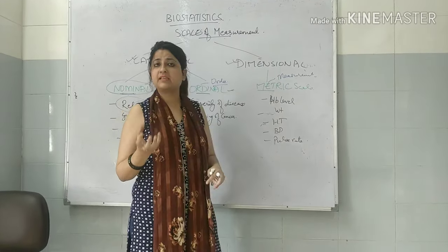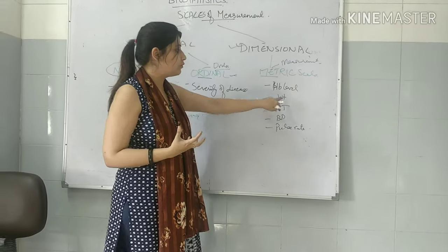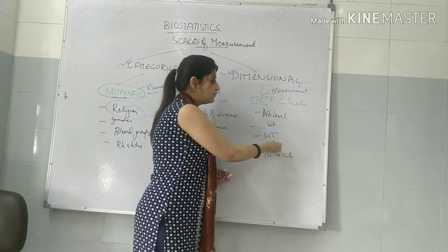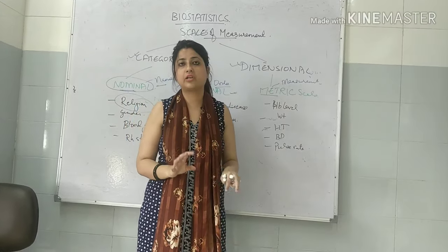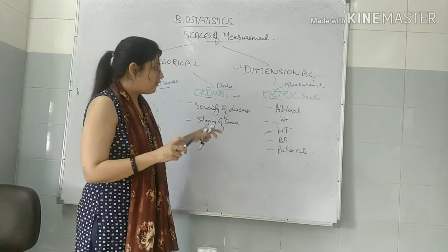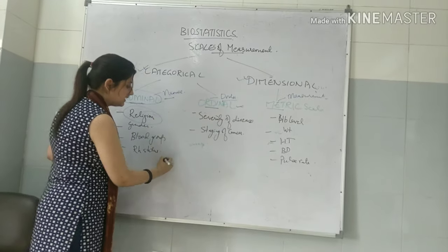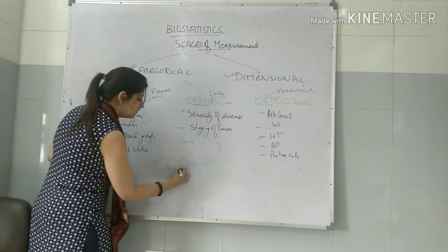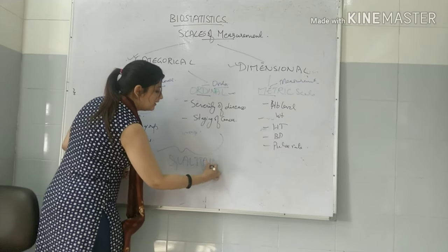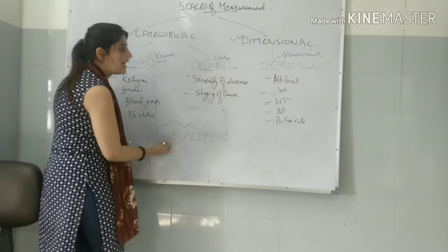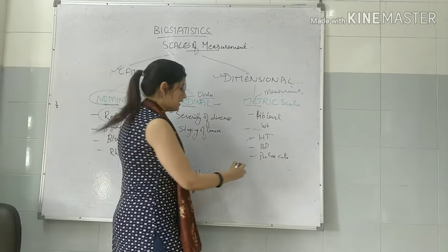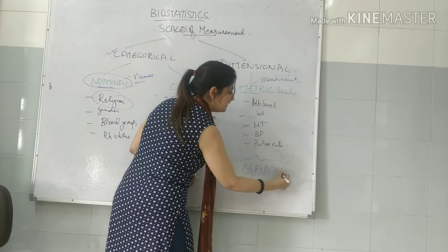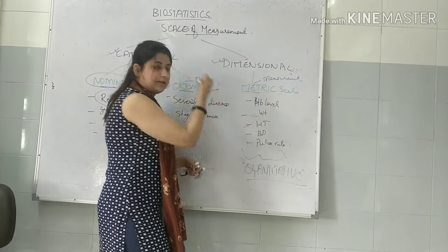The third is metric scale, which is based on measurements — where we can get exact measurements. Weight, height, BP, and hemoglobin level are all measured on metric scale. Notably, nominal and ordinal scales are for qualitative data, while metric scale is for quantitative data.